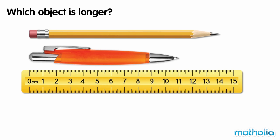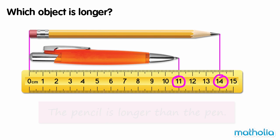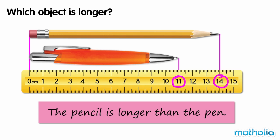Which object is longer? The pencil is 14 cm long. The pen is 11 cm long. 14 is greater than 11, so the pencil is longer than the pen.